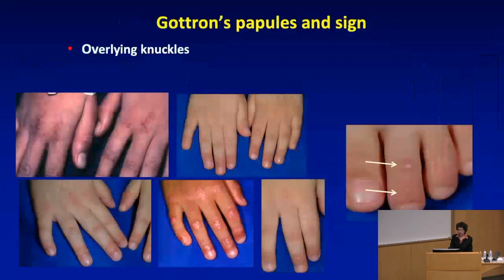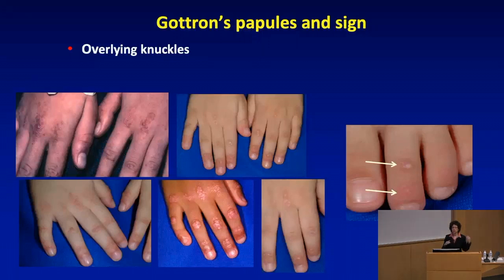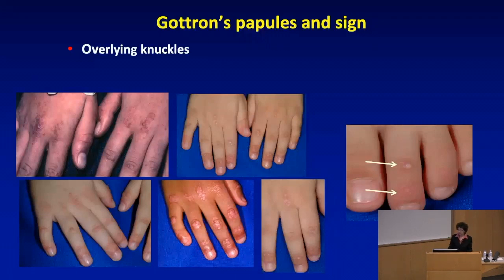Gottron's papules, when there are actual elevated papules, or the Gottron's sign when it's just flat telangiectatic erythema, tend to be overlying the knuckles. It's not just the hands — it can also be over the joints of the toes.